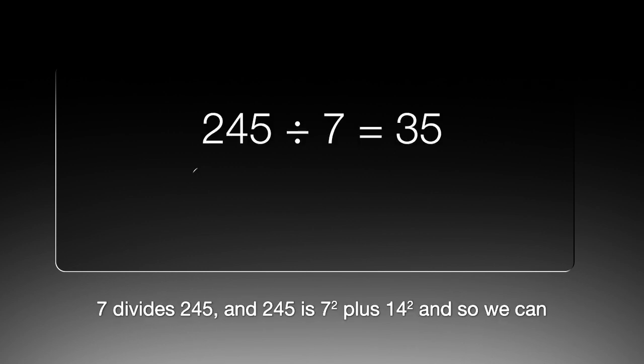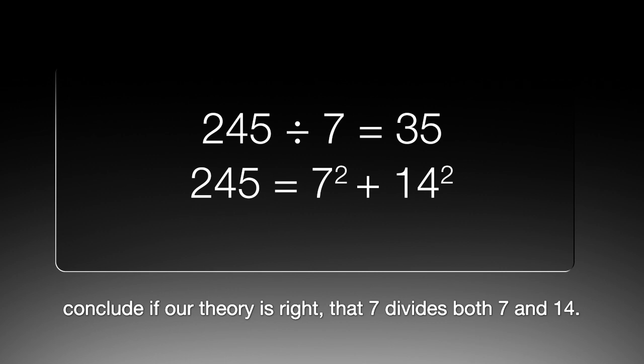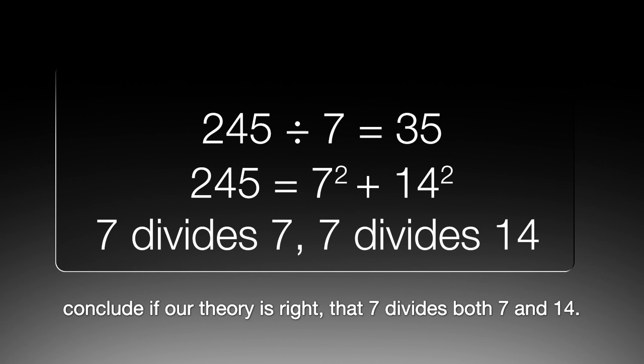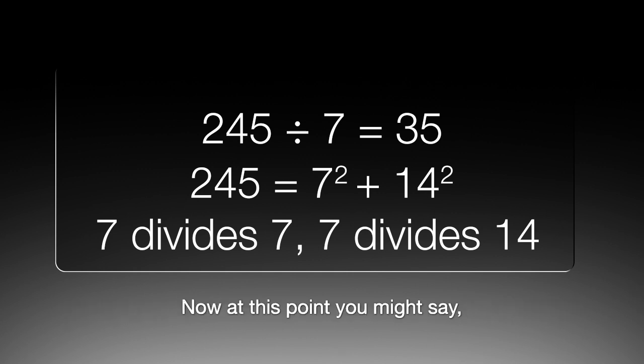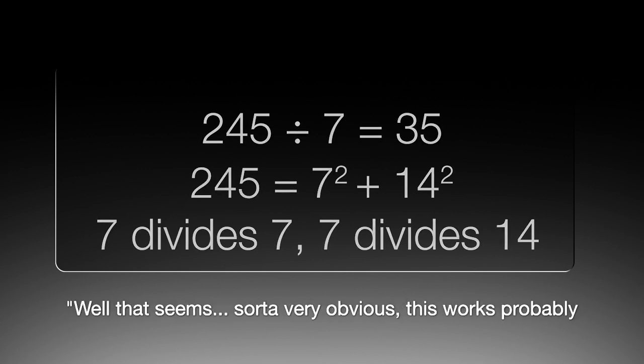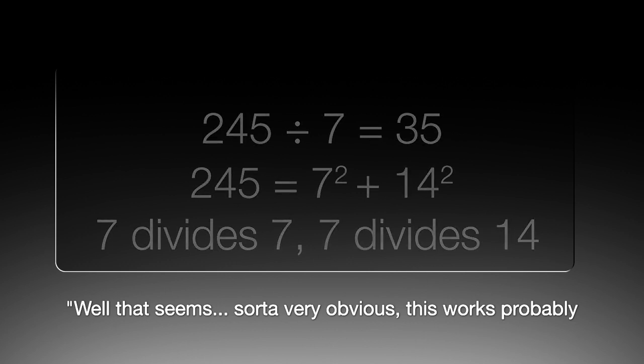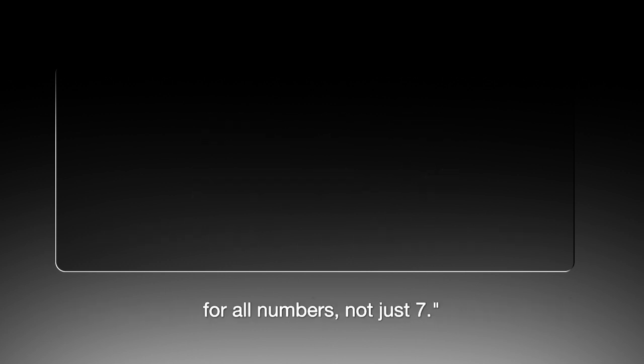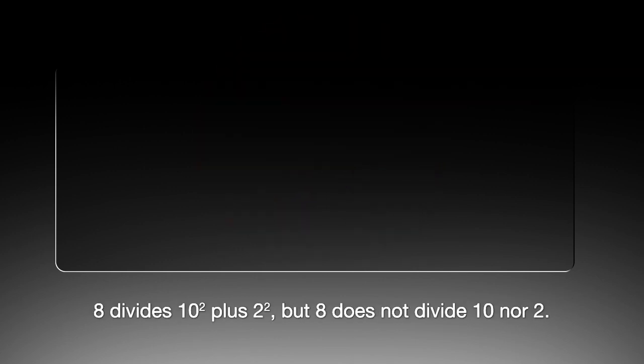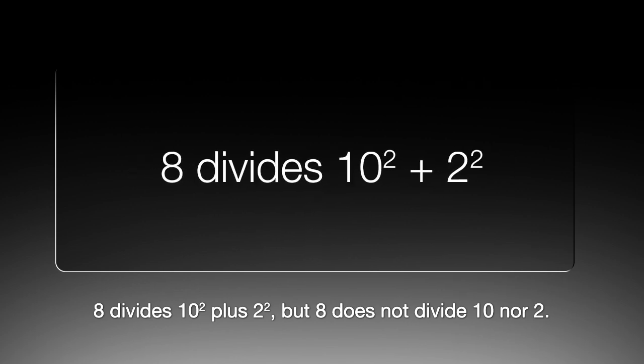7 divides 245, and 245 is 7 squared plus 14 squared, and so we can conclude if our theory is right that 7 divides both 7 and 14. Now at this point you might say well that seems sort of very obvious, this works probably for all numbers not just 7, but that's not true. 8 divides 10 squared plus 2 squared but 8 does not divide 10 nor 2.